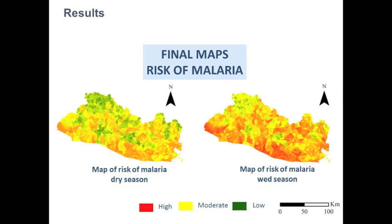This slide shows the final malaria risk maps. These maps were obtained through aggregation of environmental and social risk factor maps, with social and environmental factors given equal weight. The wet season presents higher risk than the dry season, and coastal areas consistently present higher risks. In general, the wet season shows moderate to high risk across the majority of the country, while the dry season shows low to moderate risks.